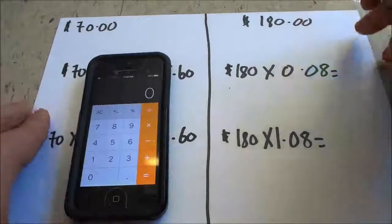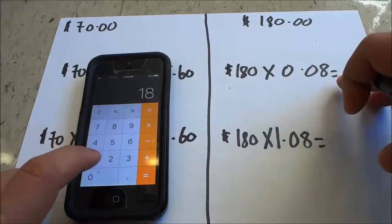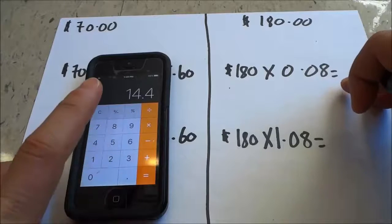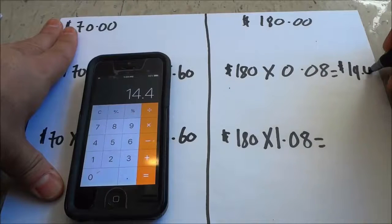the $180 product. At an 8% sales tax, I'm going to do 180 × 0.08, which is going to give me $14.40.